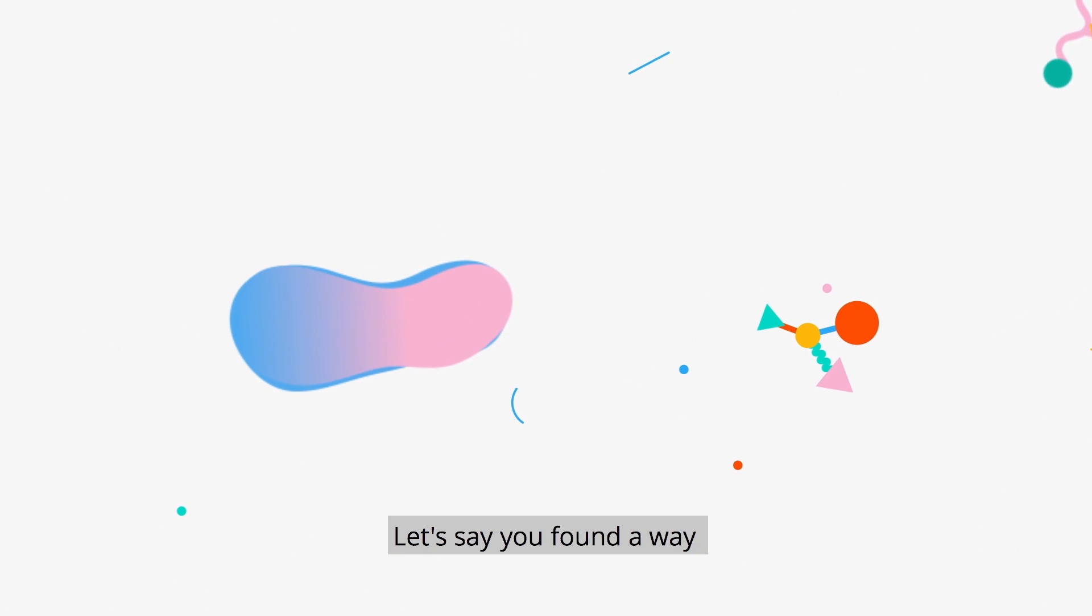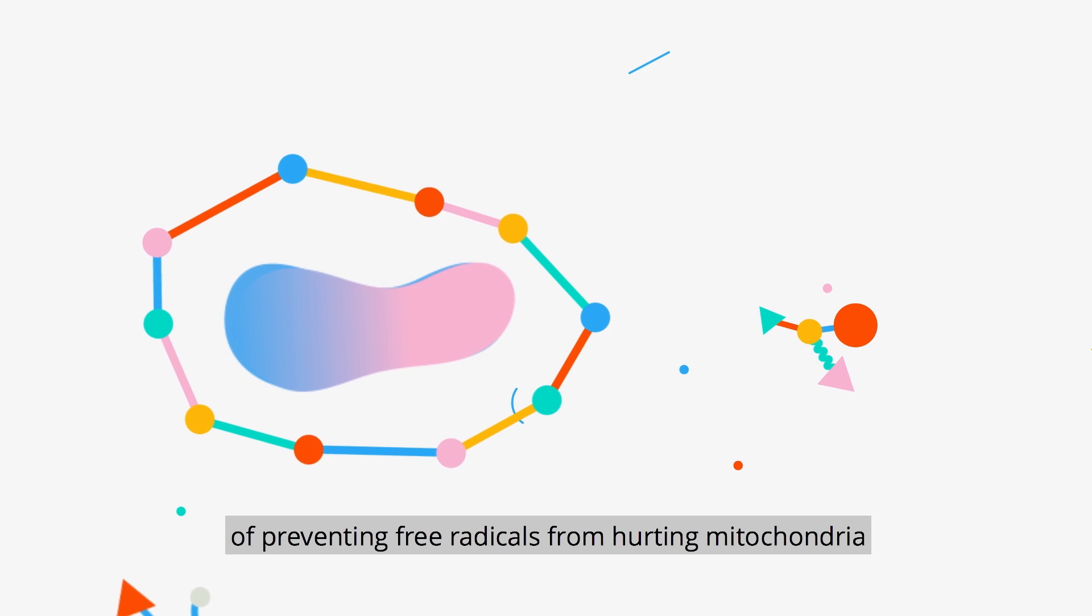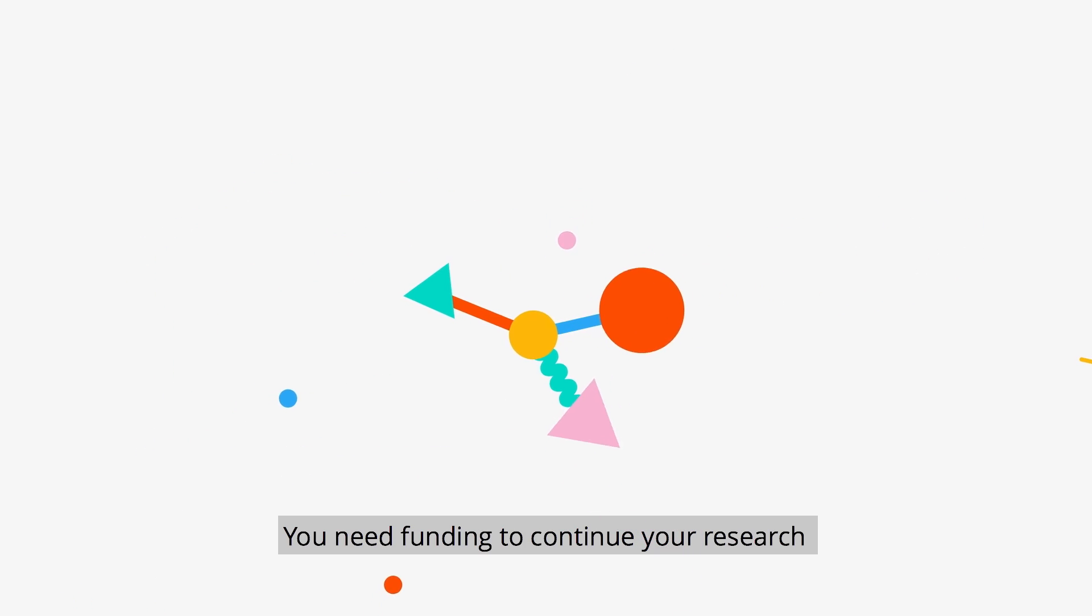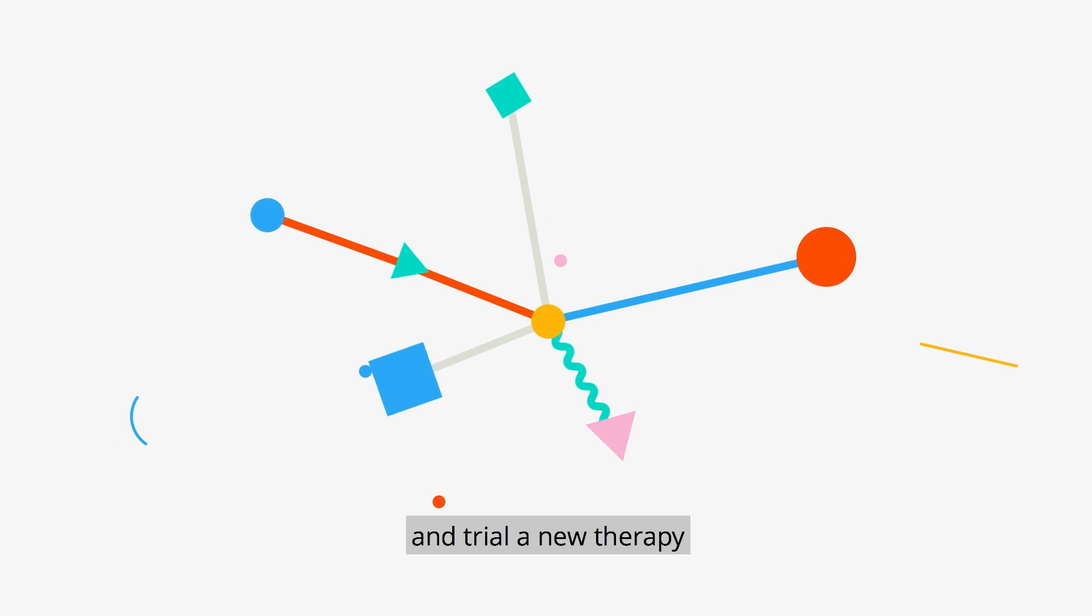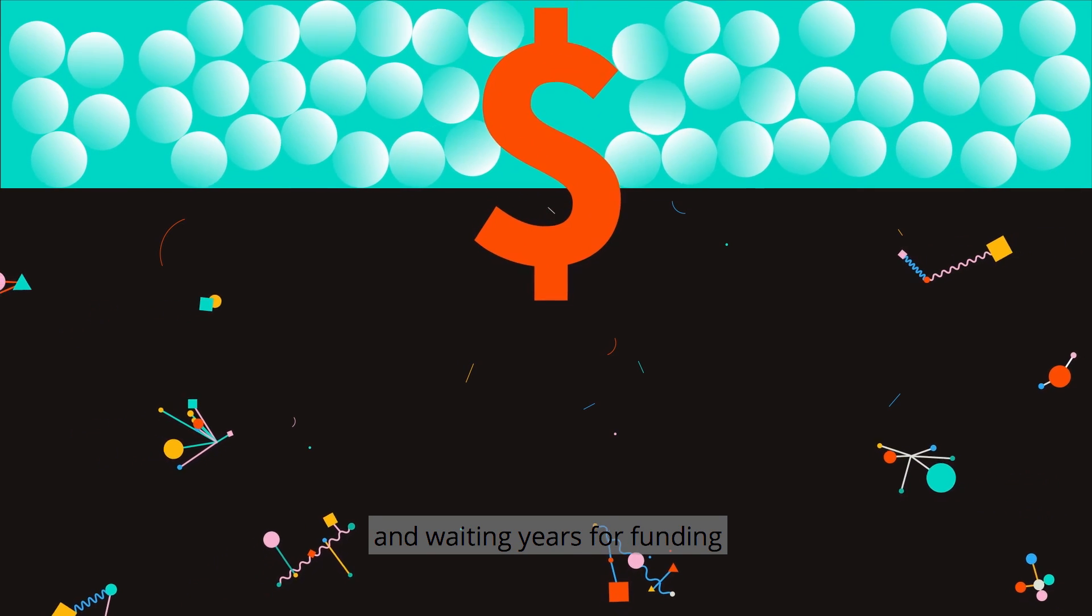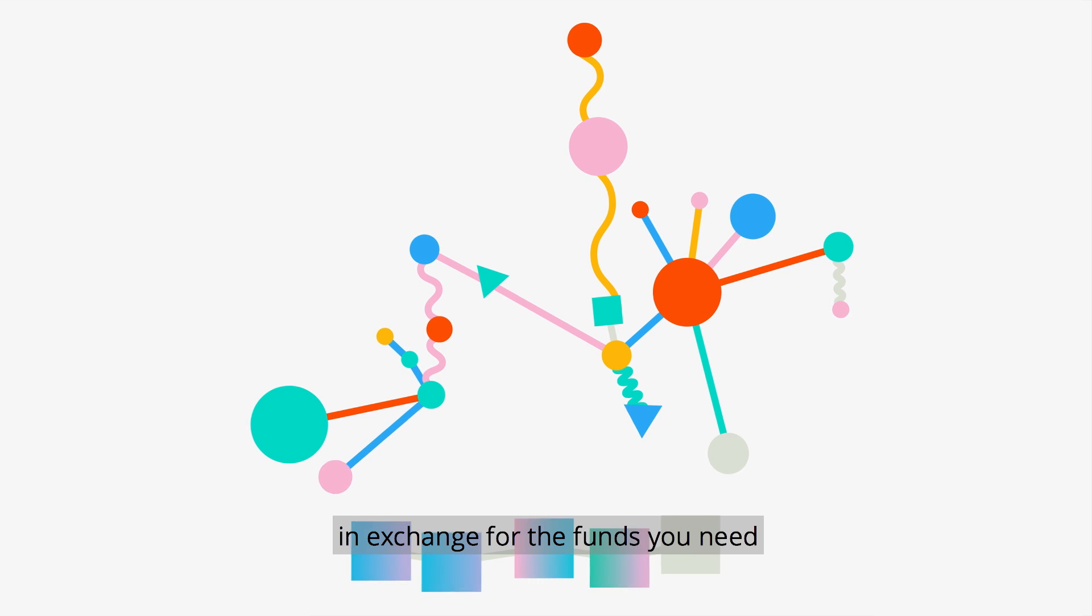Let's say you found a way of preventing free radicals from hurting mitochondria. You can't wait. You need funding to continue your research and trial a new therapy. Instead of chasing down a patent and waiting years for funding, you offer licenses to your research in exchange for the funds you need.